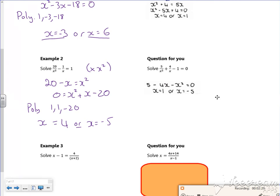Same idea. So I would rearrange that to x squared plus 4x minus 5 equals 0. There. So look at example 3.